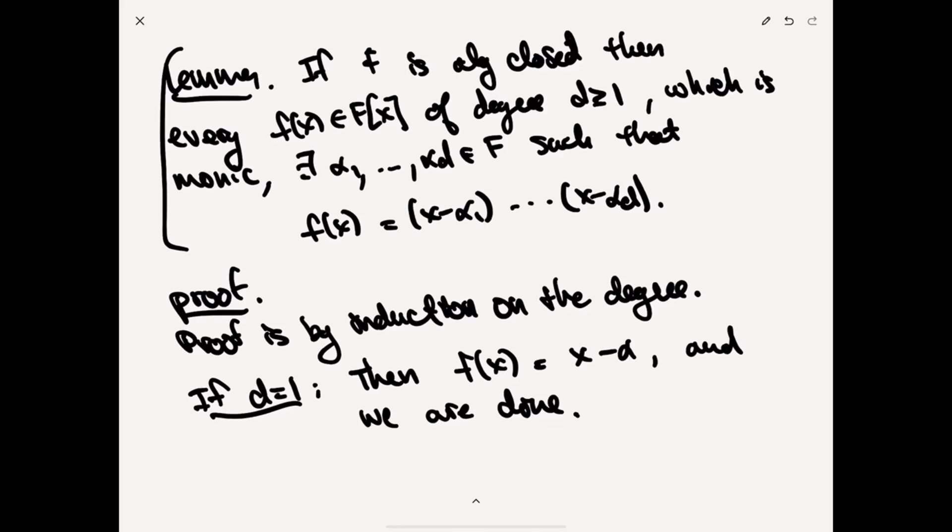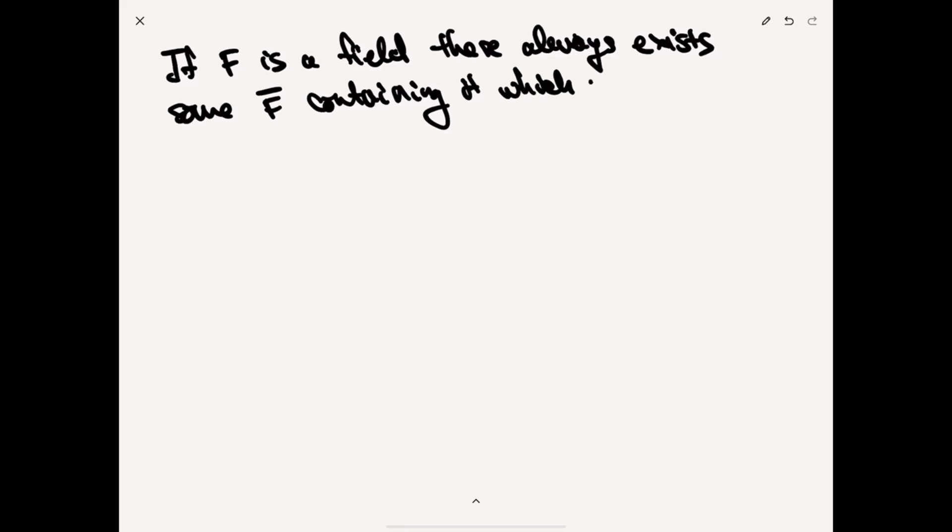So now that's kind of the basic discussion of what an algebraically closed field is. So if F is a field, there always exists some omega containing it, which is algebraically closed. So this is another field and within omega, the algebraic closure of F in omega